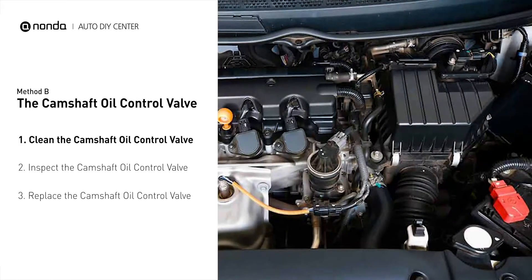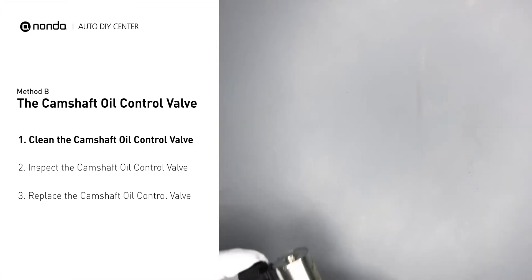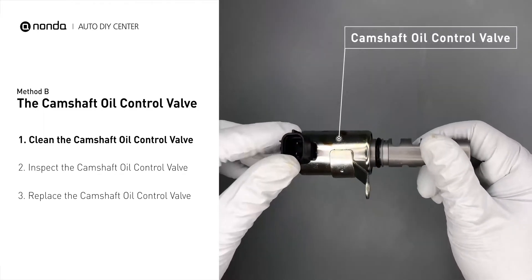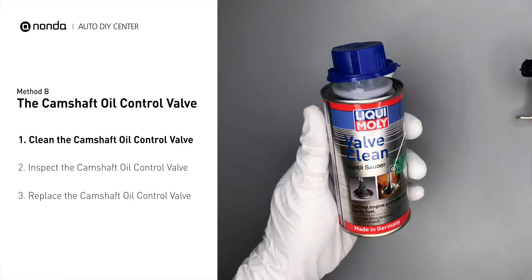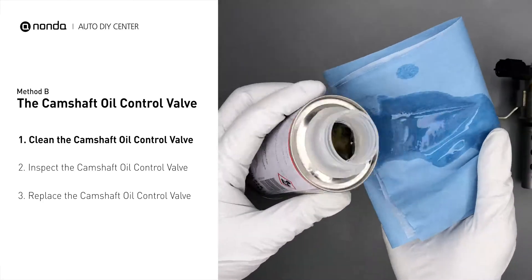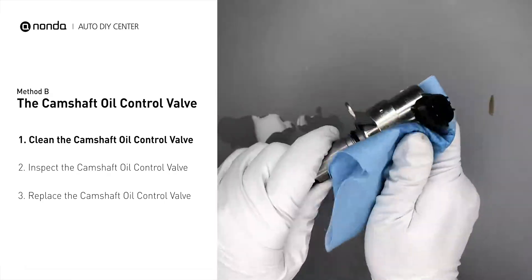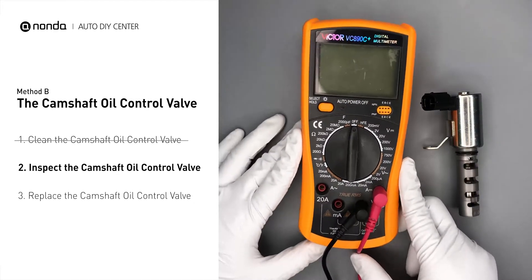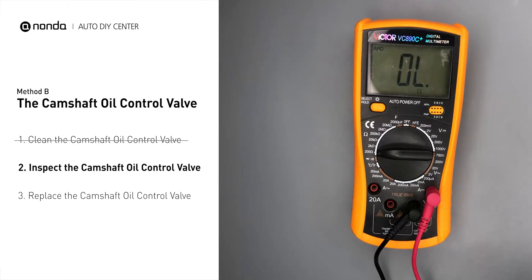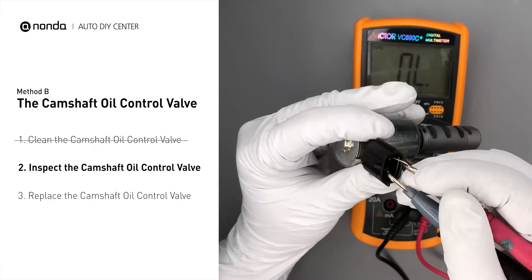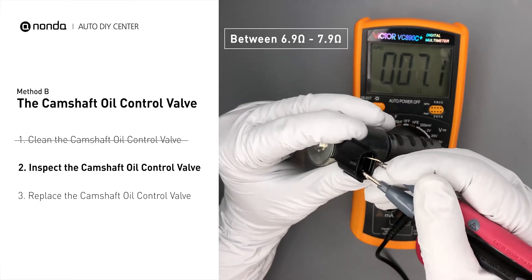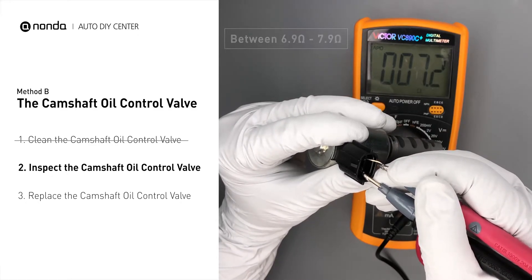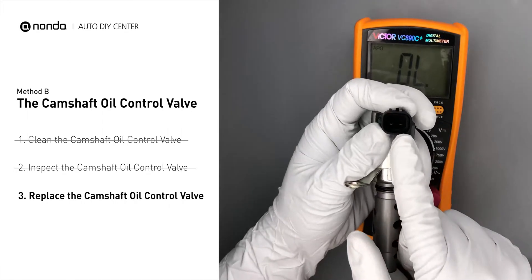The camshaft oil control valves are usually located in cars that have engines with variable valve timing systems. First, carefully remove the camshaft oil control valve from the engine. Use a valve cleaner to clean the camshaft oil control valve. Then use a multimeter to test the camshaft oil control valve. At an ambient temperature of 68 degrees Fahrenheit, the valve resistance should be between 6.9 ohms and 7.9 ohms. If you do not get a reading, this indicates that the camshaft oil control valve is faulty and needs to be replaced.